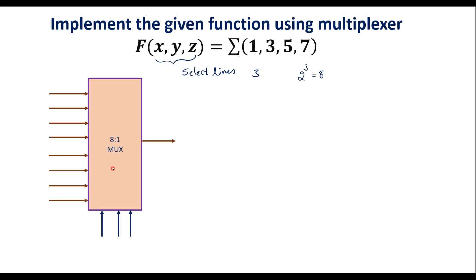Let me draw the block diagram of the 8-to-1 MUX. In an 8-to-1 MUX we have 8 inputs, 1 output, and 3 select lines. We have taken the 8-to-1 MUX because it has 3 select lines corresponding to the 3 variables x, y, z, which are the select lines, and 2³ = 8. The select lines are x, y, and z. The data inputs are d0, d1, d2, d3, d4, d5, d6, and d7. The output y can be taken as f.